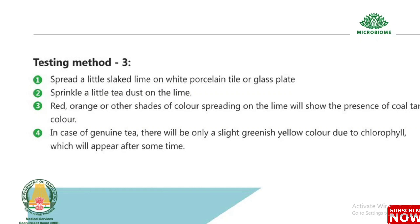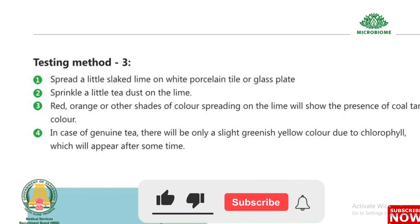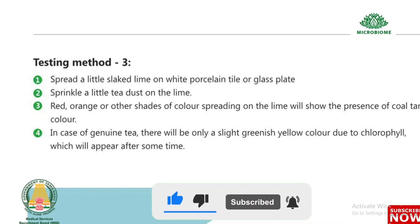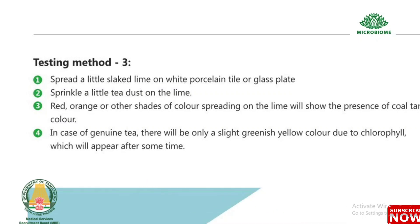Test 43, Method 3: Spread a little slack lime on a white porcelain tile or glass plate and sprinkle a little tea dust on the lime. Red, orange, or other shades of color spreading on the lime indicates the presence of coal tar color. In case of genuine tea, there will be only a slight greenish-yellow color due to chlorophyll, which will appear after some time.